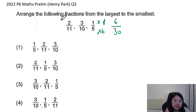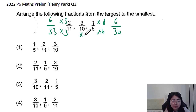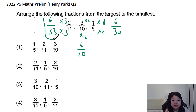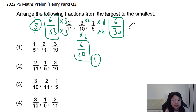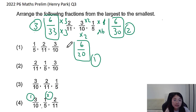For two over eleven, we multiply by three to get six over thirty-three. For the middle fraction, we multiply by two. Now with numerators all equal to six, we compare denominators — the bigger the denominator, the smaller the value. So the order is: six over twenty (which is three tenths), then six over thirty (which is one fifth), then two over eleven. The answer is option four.